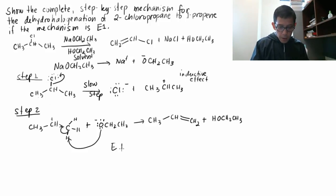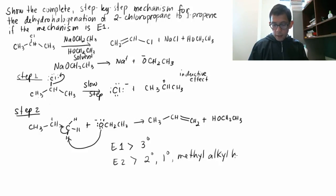So E1 is, this only, pretty much this is only for tertiary alkyl halides. And E2 is for secondary, and primary, and methyl alkyl halides. E1, slow step, involves one species. E2, slow step, involves two species.